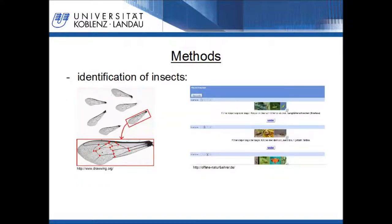The identification of an insect by software can be performed with two methods. The left picture on the slide shows a method how the genus of an insect can be determined through the characteristics of the insect's wing. First, a picture of the wing has to be taken. A tool like the software Drawwing analyzes the connections of the wing venation, which is characteristic for each species. Thus, it is possible to determine the species.